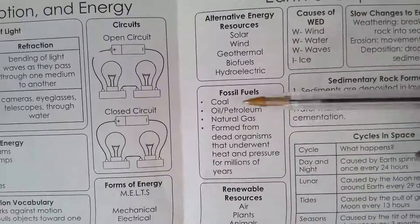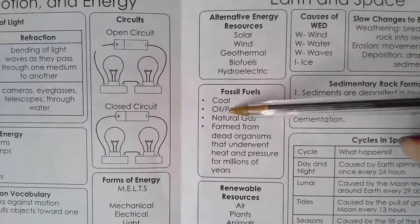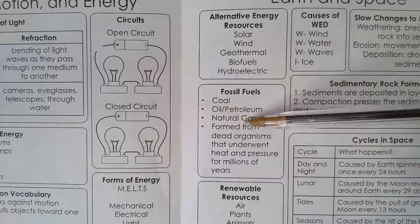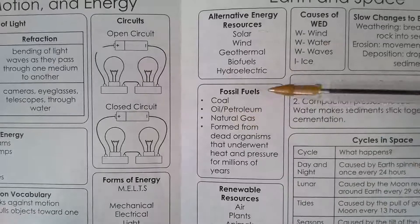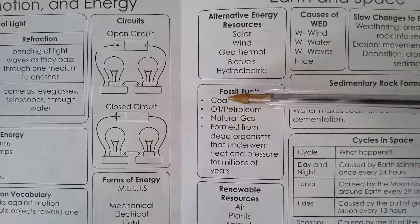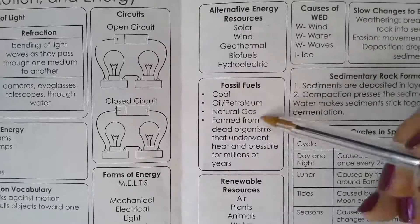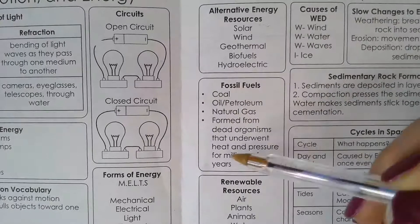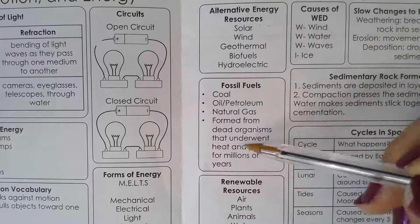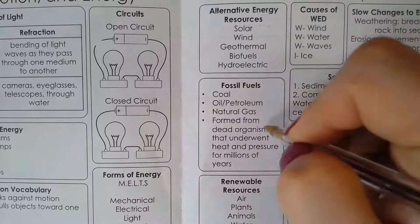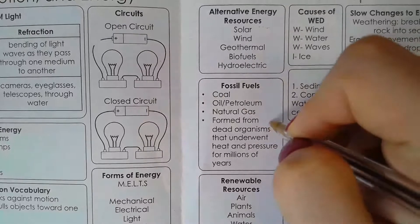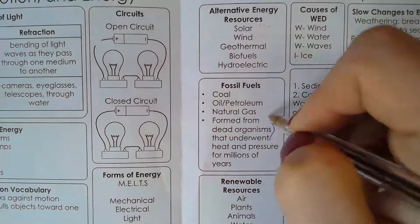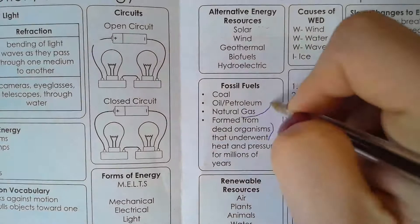Fossil fuels: coal, oil (or petroleum — same thing), and natural gas. Three fossil fuels: coal, oil, natural gas. They're formed from dead organisms that underwent heat and pressure over millions of years. You have dead things getting pressure and heat for millions of years, and then you get fossil fuels.